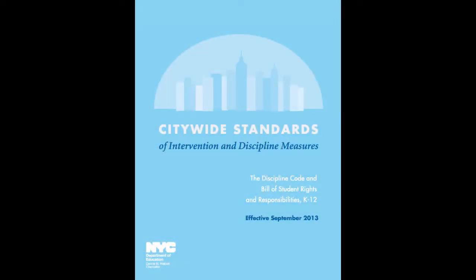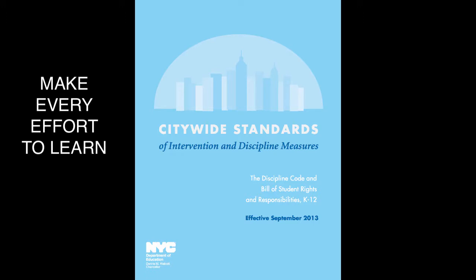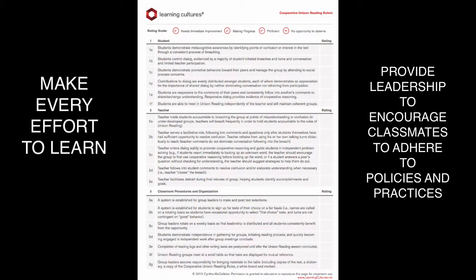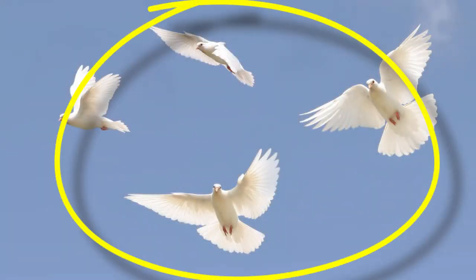Then we reference New York City's Code of Discipline with a focus on students' rights and responsibilities — we read each right and responsibility in unison. The New York City Discipline Handbook names two important responsibilities: first, that every student should make every effort to achieve; and second, that every student should provide leadership to encourage fellow students to follow school policies and practices. We make a point to help students understand that the policies and practices of our school include the learning cultures formats, and that it's an expectation for all students to follow the format procedures, which provide a context for every student to enjoy maximal freedom.